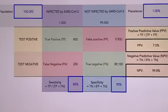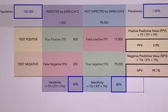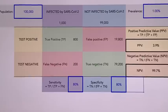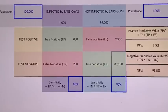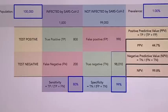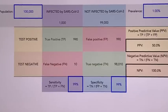Conversely, with specificity at 80%, we start with 99,000 people who are not infected. Twenty percent of those would falsely test positive, and 80% would truly test negative. As you drive up specificity, you drive down the false positives. A 99% specific test will have only 1% false positives, whereas a 99% sensitivity test will have only 1% false negatives.